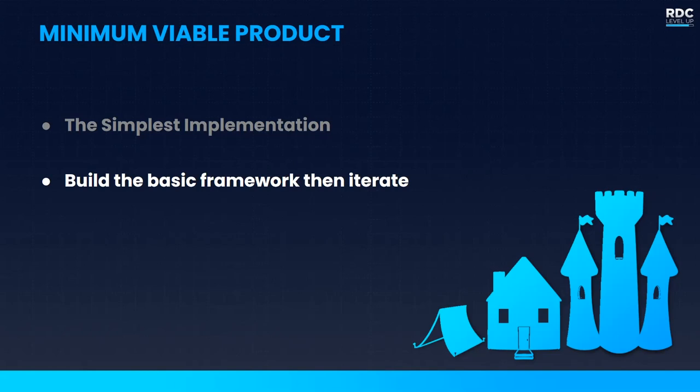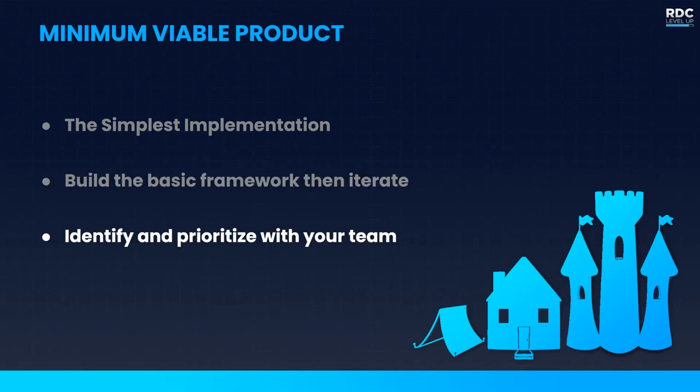When you release that basic framework, you can get directional feedback from players that will send you toward the systems that should belong in your feature. You should identify and prioritize features with your team — what is critical for the first release, what systems can go into the backlog, and what systems are good candidates for future iteration, maybe in your first or second subsequent release.